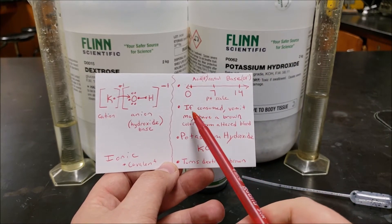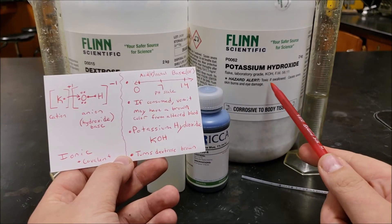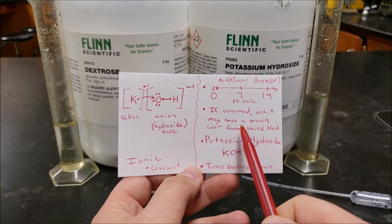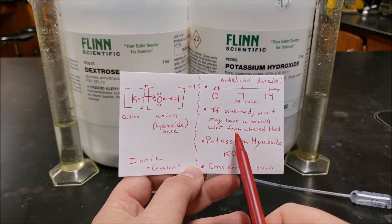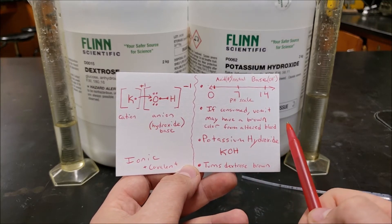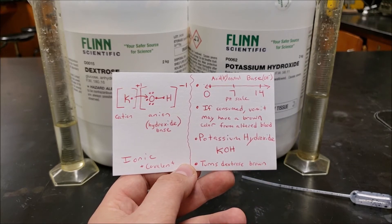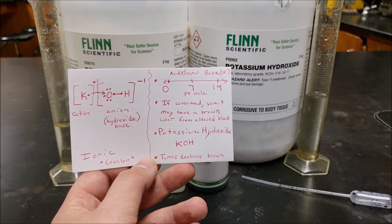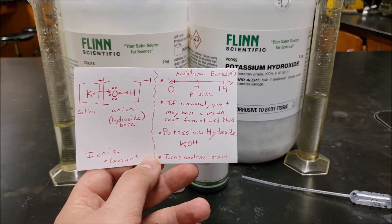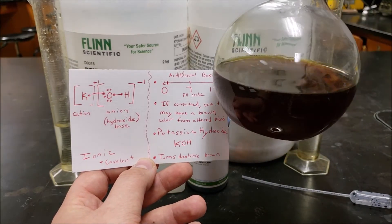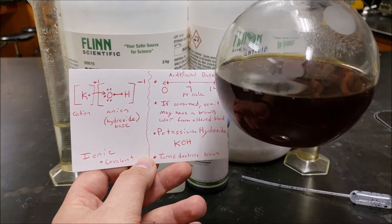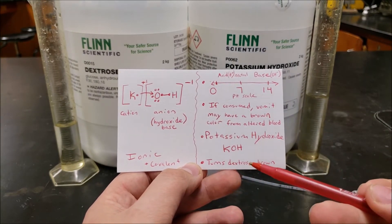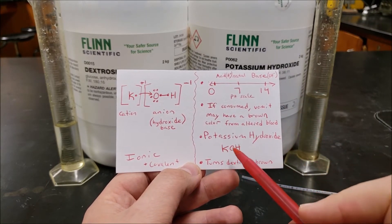One thing to know: if you consume potassium hydroxide it is toxic if swallowed and causes severe skin burns and eye damage. From research, some of your vomit may have a brown color from altered blood. We also know it turns dextrose brown — if you have a solution of these two things mixed together for long enough it will turn brownish. I kept a sample from a year ago and it turned an even darker brown. So we get that brownish-yellowish color from potassium hydroxide and dextrose in a basic environment. The formula is KOH.